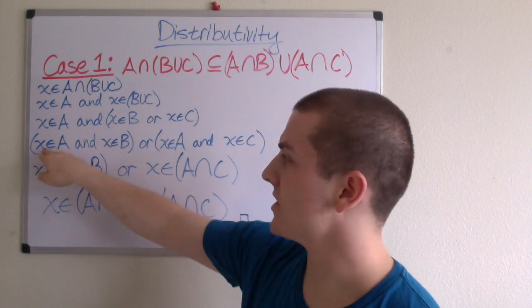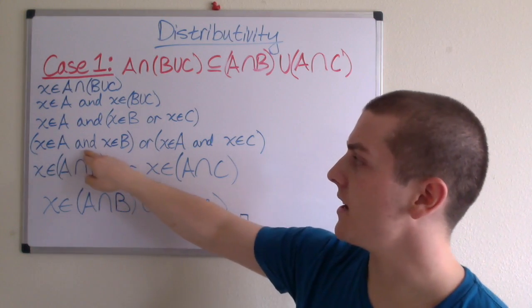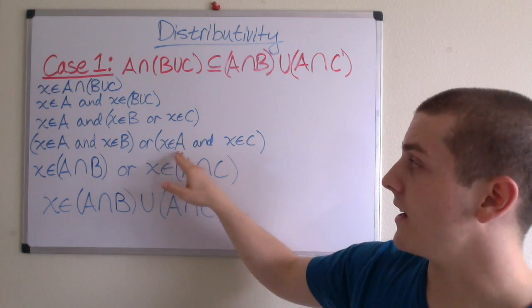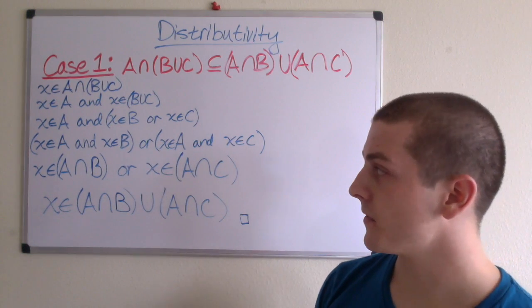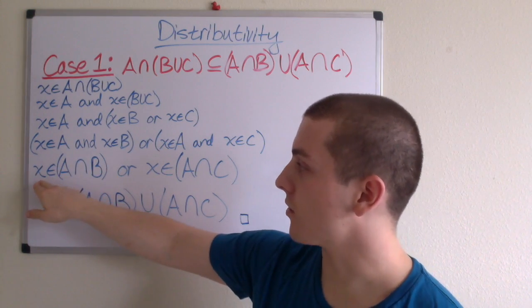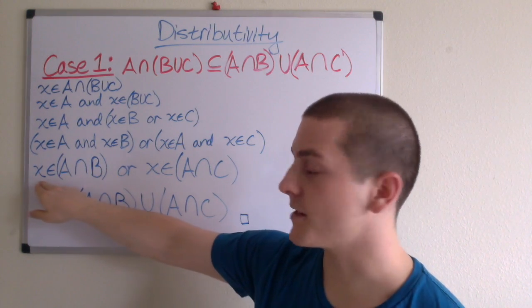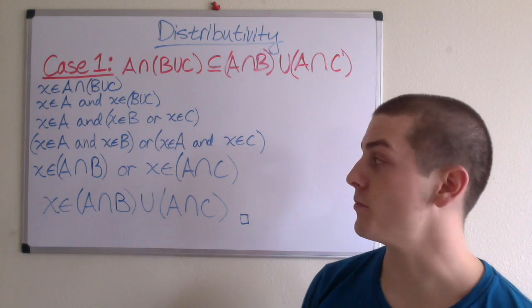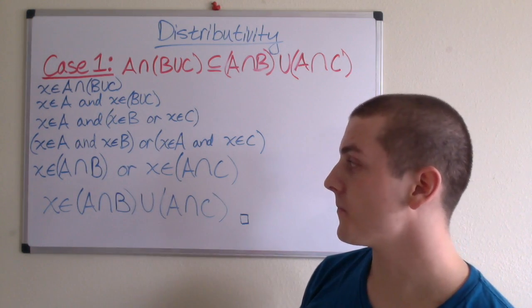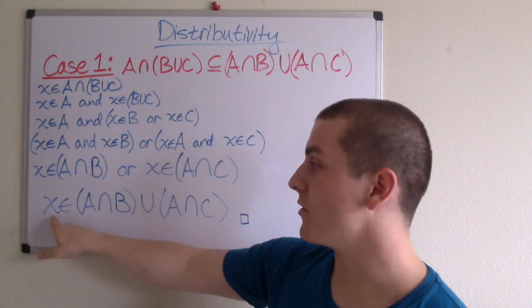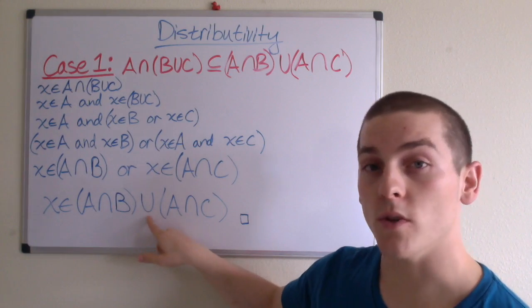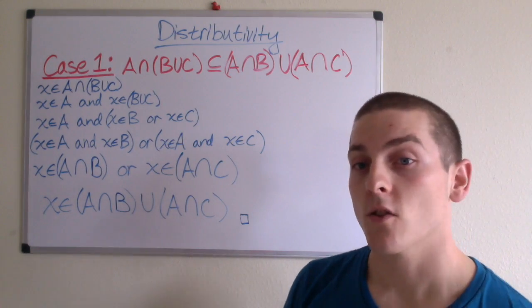From this, we can deduce that X is an element of A and X is an element of B, or X is an element of A and X is an element of C. Now by definition we can rewrite this as X is an element of A intersection B or X is an element of A intersection C. And finally, we can deduce that X is an element of (A intersection B) union (A intersection C).